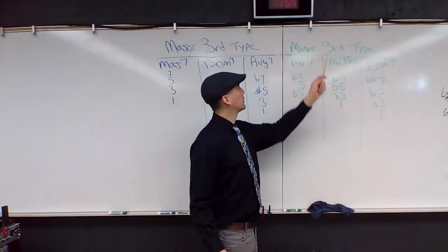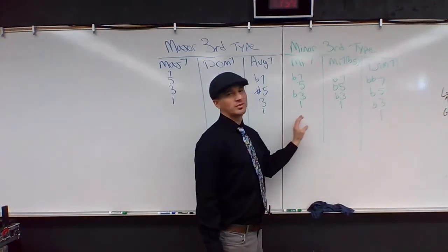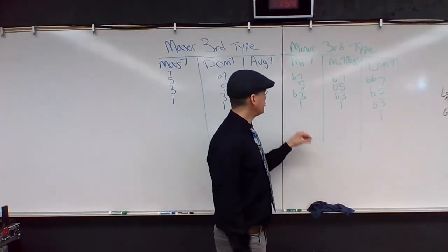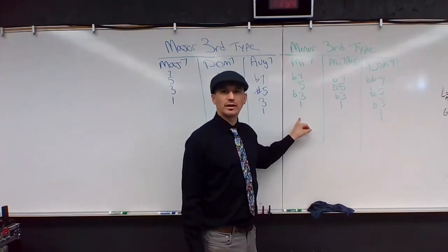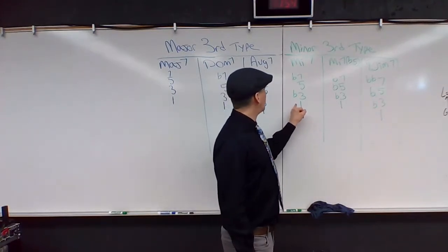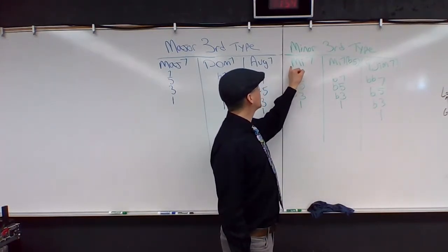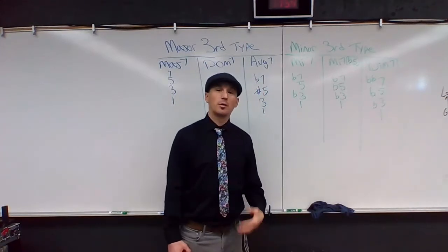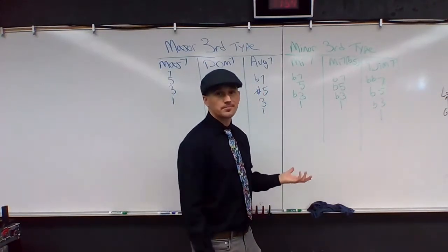And over here on our minor third type, from most to least common, I suppose. I hope you can see this in the screen. One, flat three, five, flat seven is our minor seven. So that's like the most common seventh chord probably, you might say.